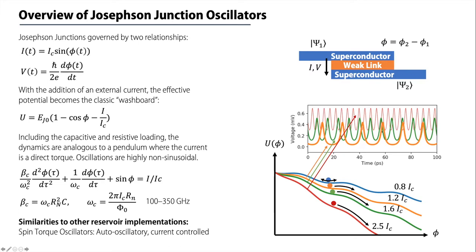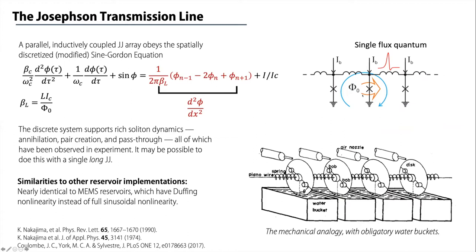When your current exceeds what's known as the critical current of the junction, you send it briefly into a voltage state where it will start to slide down this potential well in a very non-sinusoidal manner. As you just exceed the critical current, you start to have voltage state oscillations like this orange trace. As you go farther, the frequency gets much higher. This hints at the output quantity we're going to be using.